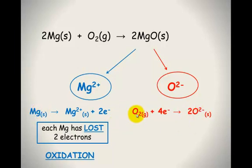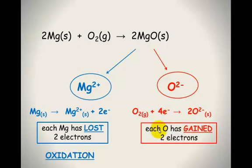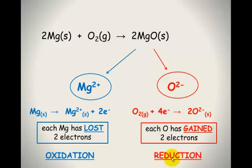To recap: oxygen became 2O²⁻, so the total charge on that side is two times 2-negative, which is 4-negative. To balance both sides, I need to add four electrons on the reactants side to give a total of 4-negative. Each oxygen has gained two electrons — two electrons to each of those two oxygens. And that is reduction. Remember OIL RIG: oxidation is loss of electrons, reduction is gain of electrons.